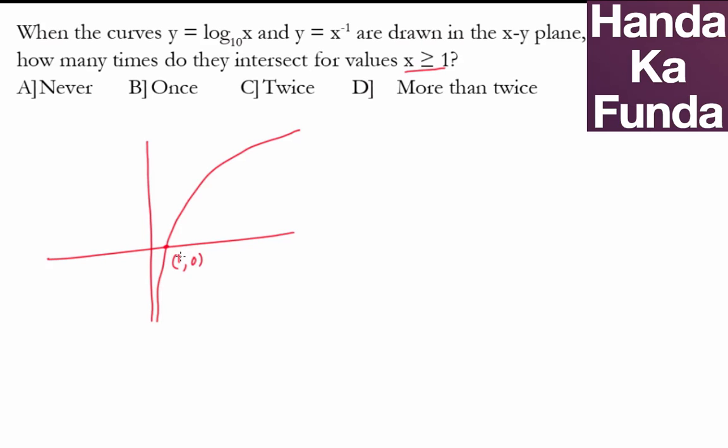And what will the graph of 1 by x look like? Well, 1 by x would be something of this sort. So at how many points can they intersect? Even with bad graph plotting skills like mine, you can say that it will intersect at only one point or once. See how quickly you got the answer if you know how to plot the graphs.